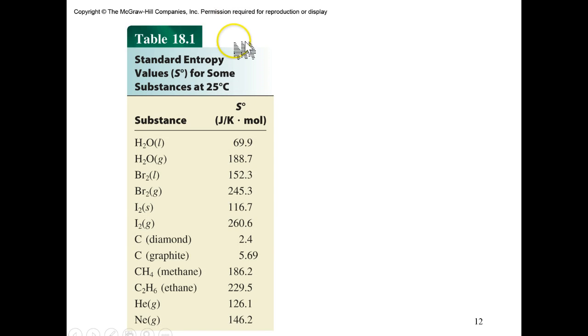And here's some standard entropy values at room temperature. Is there a trend that we can see between these? I see that helium, a relatively small gas, is a relatively, well, they're all over the place. These are not listed in order, are they? It looks like a relatively high number, certainly a lot higher than the standard entropy for a diamond.